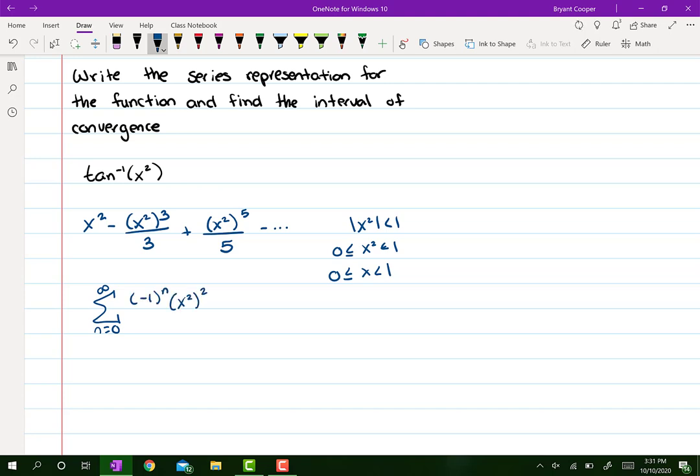Then now you write out your summation. And instead of writing x, you're just going to write x squared and simplify it out. Then what I do is I raise the power. So I write the sigma, but I raise it, I distribute in that 2. So it becomes 4n plus 2, all divided by 2n plus 1.